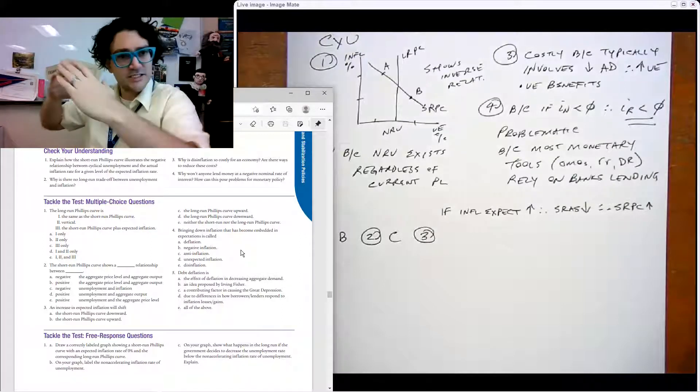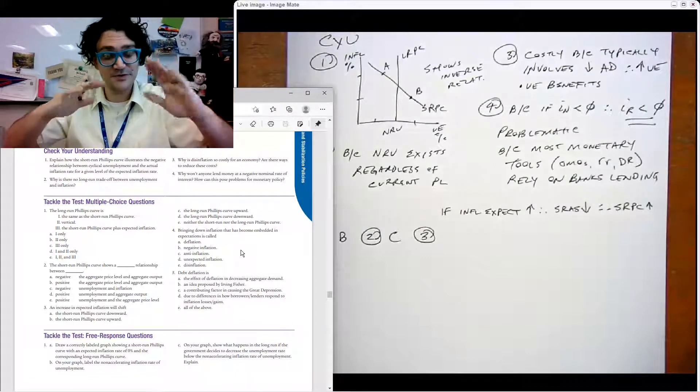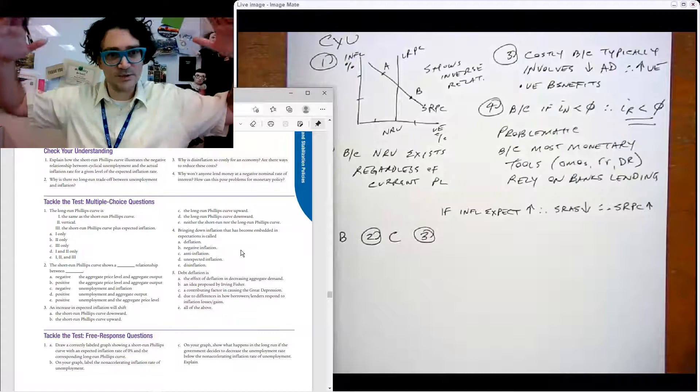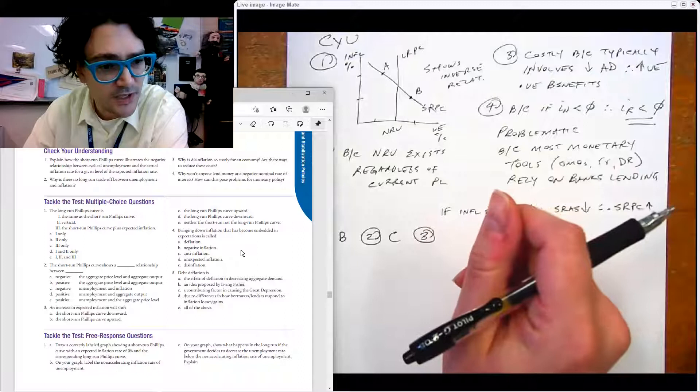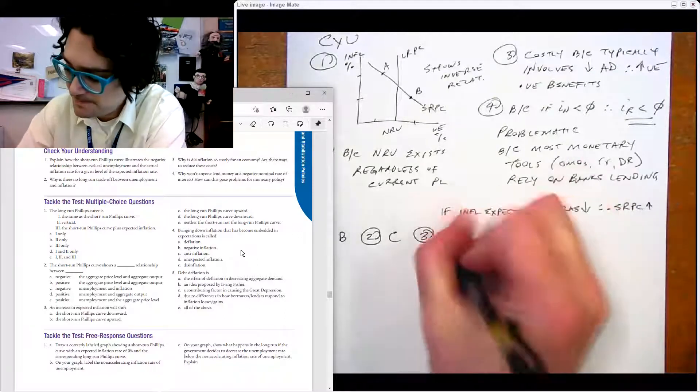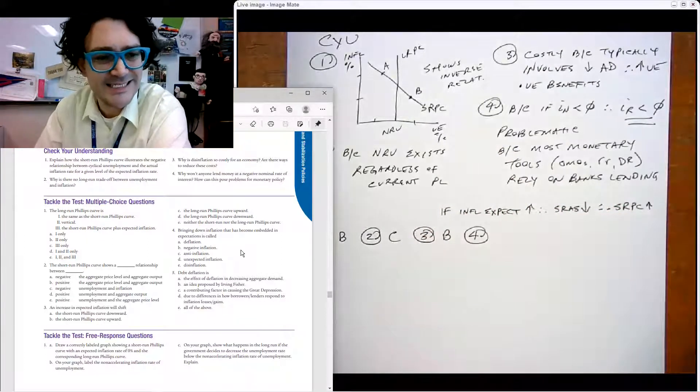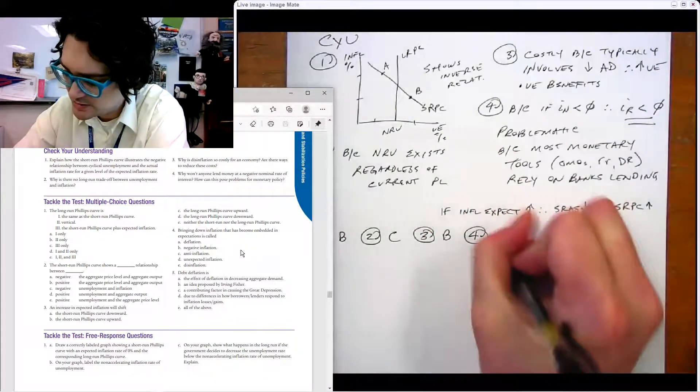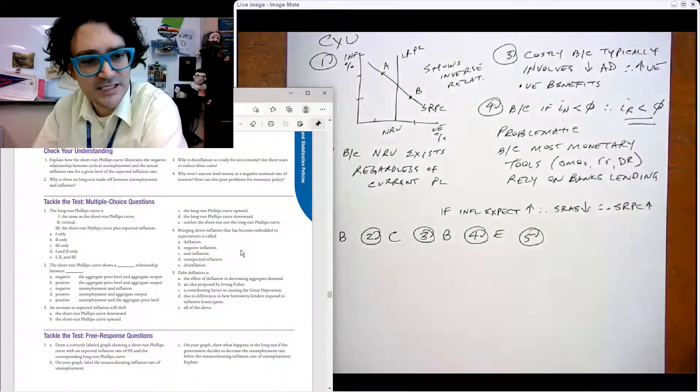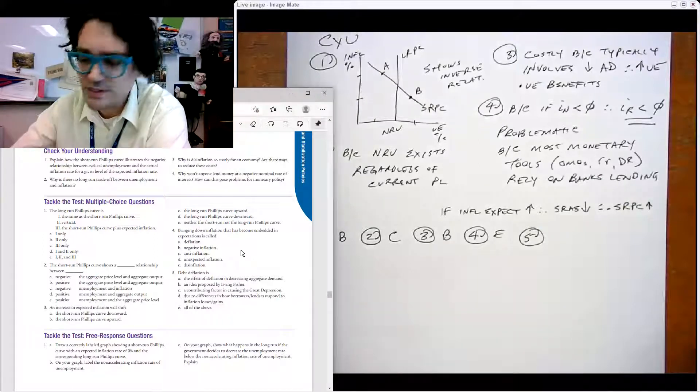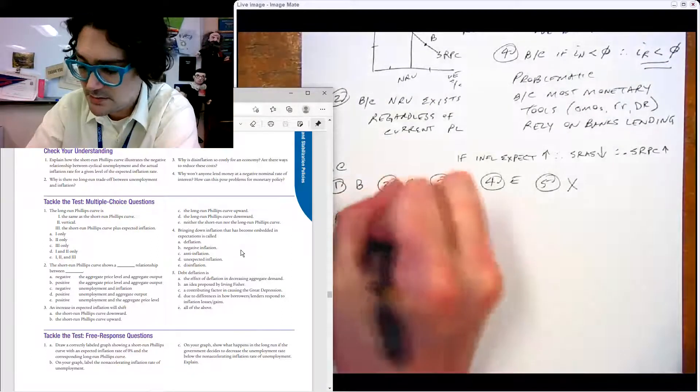If we've got the SRAS going to the left, then the other one has to be going to the right. SRPC to the right or upward, and which one is that? That's B. Number four says bringing down inflation that's become embedded, that's disinflation E, it's just a definition. Number five, debt deflation, that one's not going to appear on the quiz so don't worry about that one.